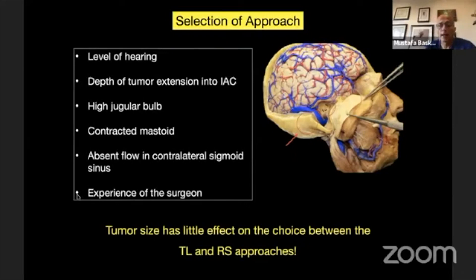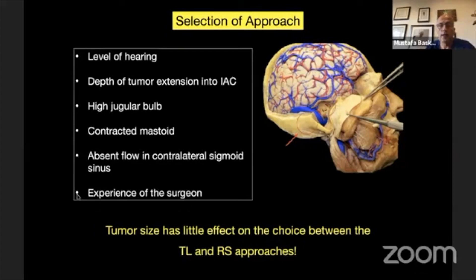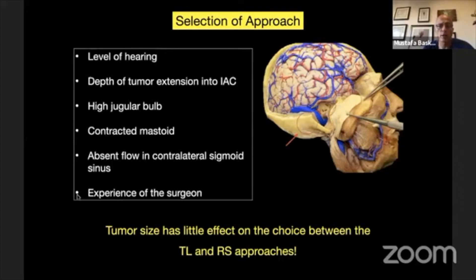How do we select the approach? Several factors influence decision-making: level of hearing, depth of tumor extension into the internal acoustic canal, high jugular bulb, and contracted mastoids. For example, if you have a very small mastoid, trans-lab may become a problem in large tumors. Also, if there is any reason you are solely dependent on venous drainage on the side you are operating — no sigmoid sinus or transverse sinus on the contralateral side — you may not want to do a trans-lab approach. Of course, the experience of the neurosurgeon matters. But in my experience, tumor size has little effect on the choice between trans-labyrinthine and retrosigmoid approaches.